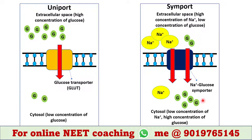Since the movement of glucose occurs against the concentration gradient, it is an active transport. But in this case it does not take energy from ATP hydrolysis; instead, it uses the energy of the sodium gradient.